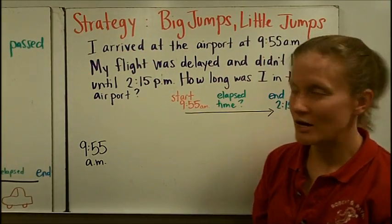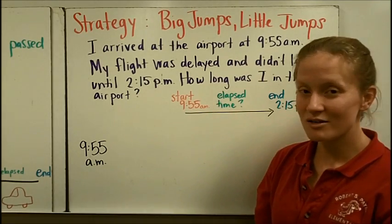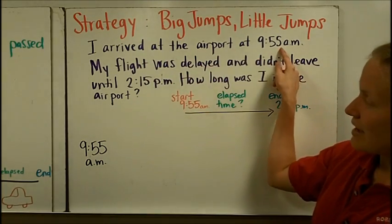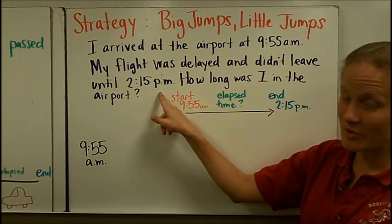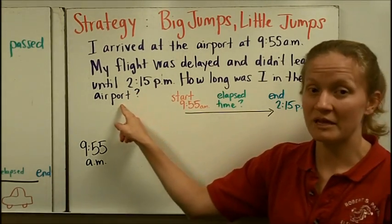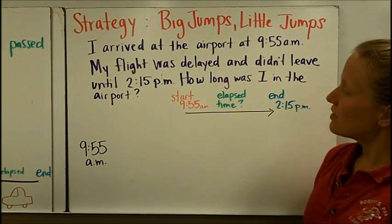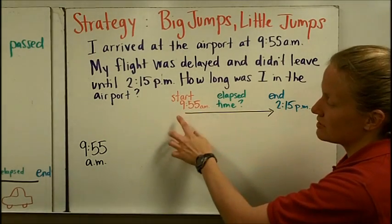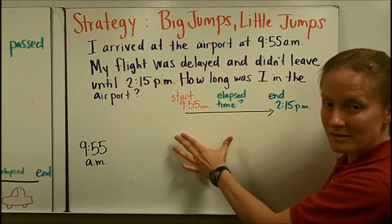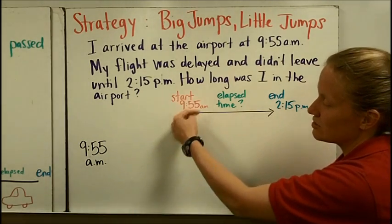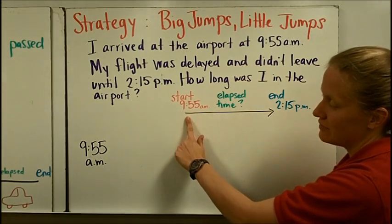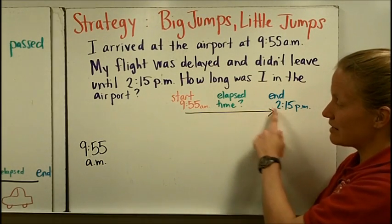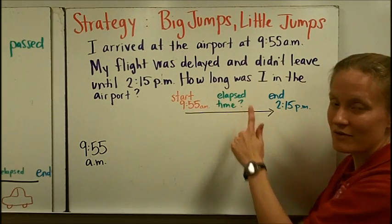Let's use the big jumps, little jumps strategy to start solving some elapsed time problems. I arrived at the airport at 9:55 a.m. My flight was delayed and didn't leave until 2:15 p.m. How long was I in the airport? We figure out what we have and what we need to know. I started at 9:55 a.m., and my end time was 2:15 p.m. I need to find the elapsed time.